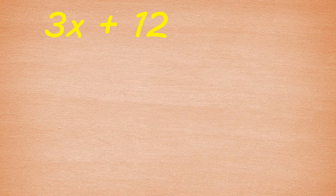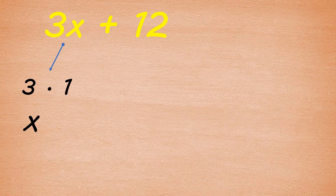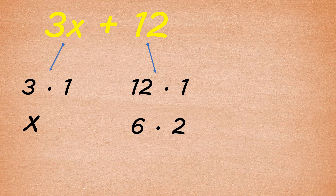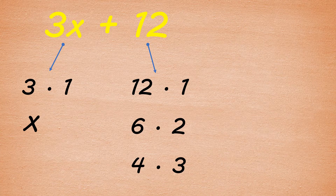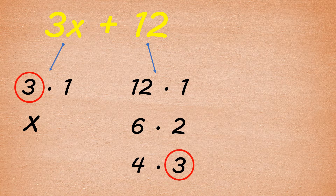For 3x, the factors are 3 and x, while for 12 the factors are 12 and 1, 6 and 2, and 4 and 3. Compare the factors of these two terms and look for their common. In this example, their common factor is 3.